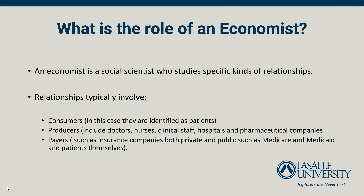Burnell describes the role of an economist as a social scientist who studies specific kinds of relationships — relationships that typically involve consumers, and in this case we identify them as patients; producers, such as doctors, nurses, clinical staff, hospitals, and pharmaceutical companies; and lastly payers, such as insurance companies both private and public — for example, Medicare and Medicaid — and patients themselves.